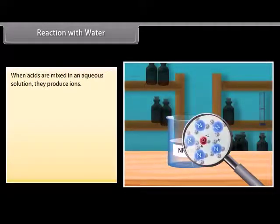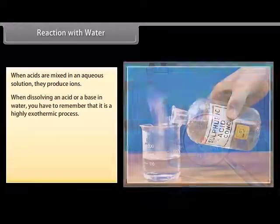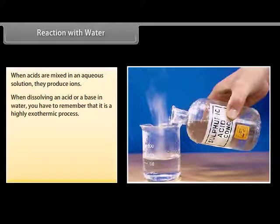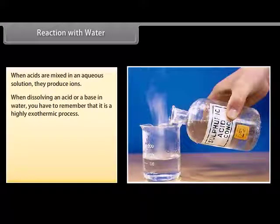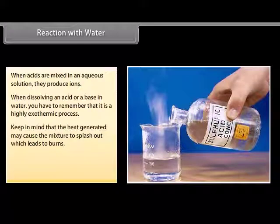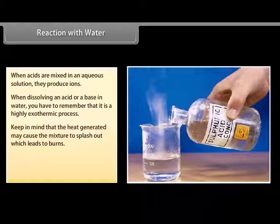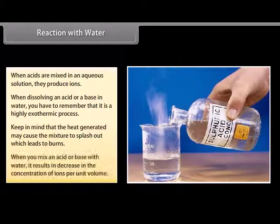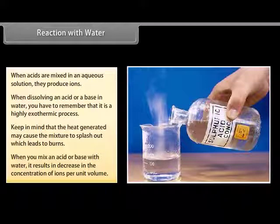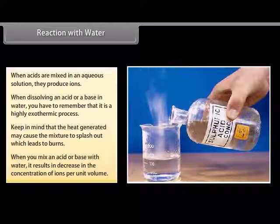When acids are mixed in an aqueous solution, they produce ions. Dissolving an acid or a base in water is a highly exothermic process. While adding water to a concentrated acid, keep in mind that the heat generated may cause the mixture to splash out, leading to burns and possibly breaking the glass container due to excessive local heating. When you mix an acid or base with water, it results in a decrease in the concentration of ions per unit volume — this process is called dilution, and you get diluted acid or base.